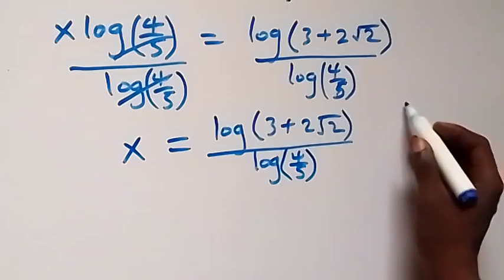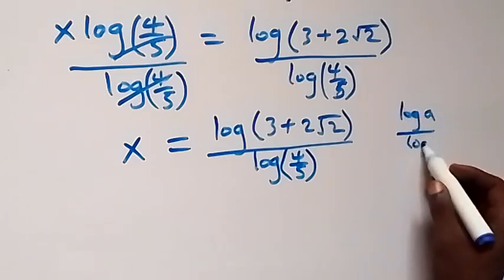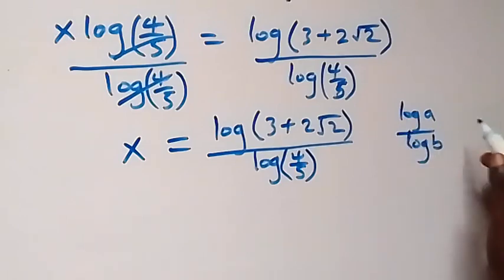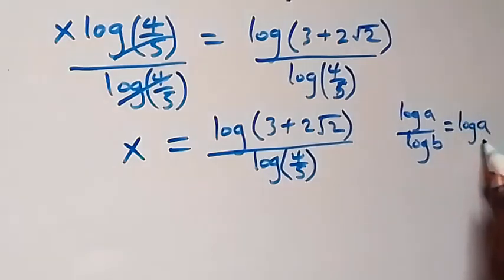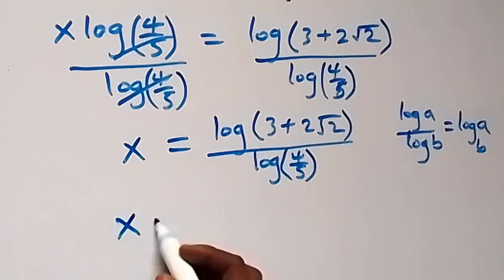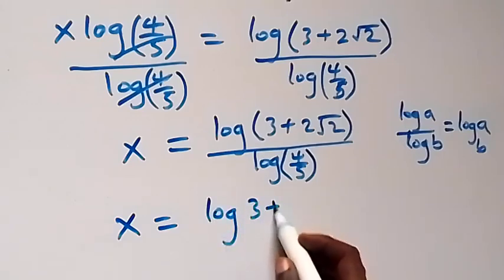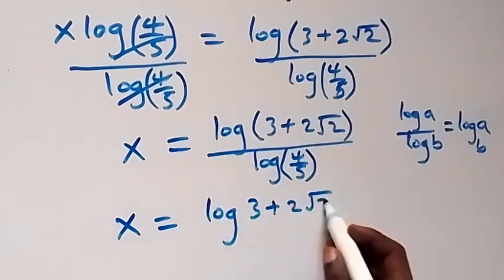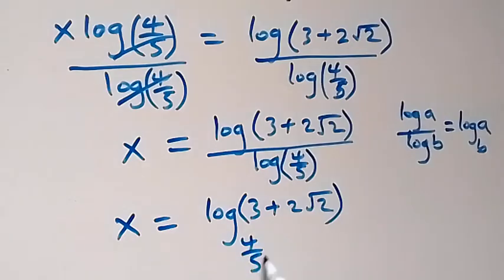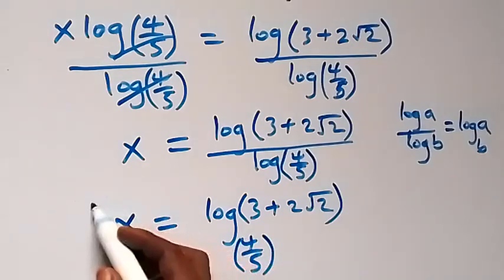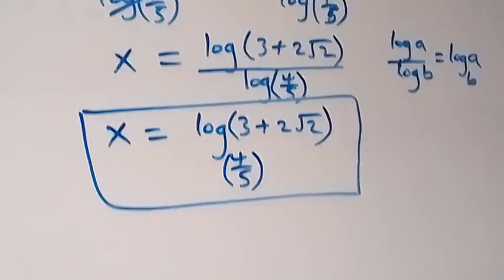From the change of base rule, when we have log a over log b we can write this as log a to base b. So x is now equal to log of 3 plus 2 root 2 to base 4 over 5. So we have one solution here as the value of x.